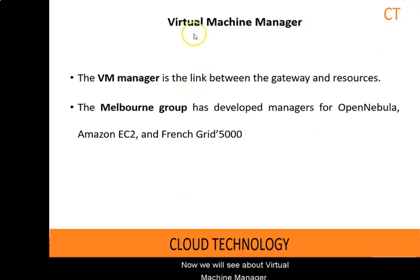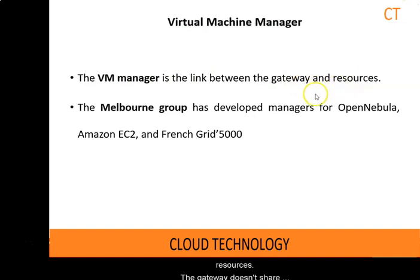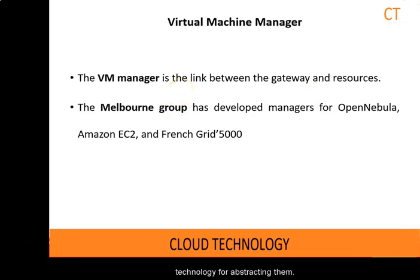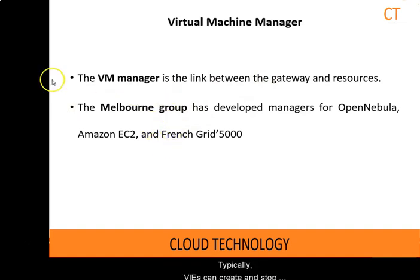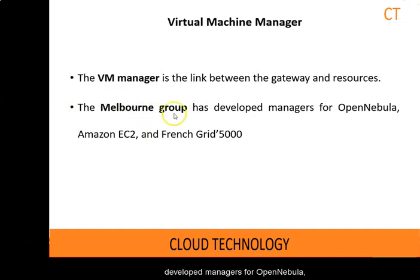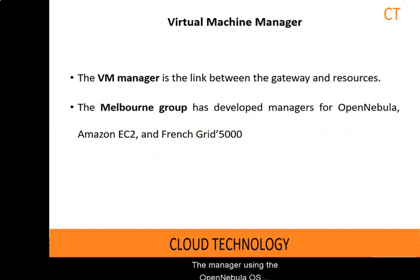Now we will see about the virtual machine manager. The VM manager is the link between the gateway and resources. The gateway doesn't share physical resources directly but relies on virtual machine technology for abstracting them. Hence, the actual resources it uses are VMs. The manager manages VMs deployed on a set of physical resources. The VM manager implementation is generic so that it can connect with different VAEs. Typically, VAEs can create and stop VMs on a physical cluster. The Malphone group has developed managers for OpenNebula, Amazon EC2, and French Grid 5000. The manager uses the OpenNebula OS to deploy VMs on a local cluster.